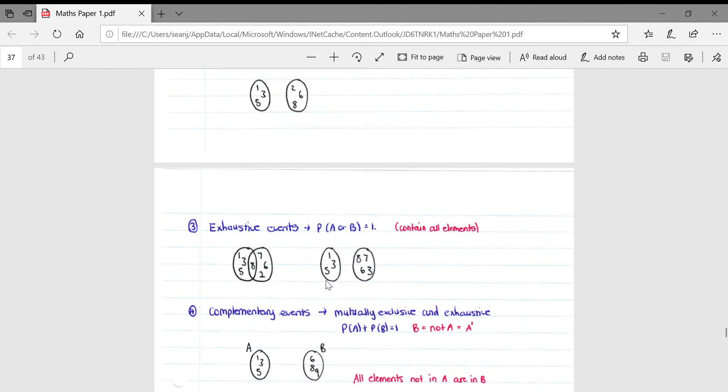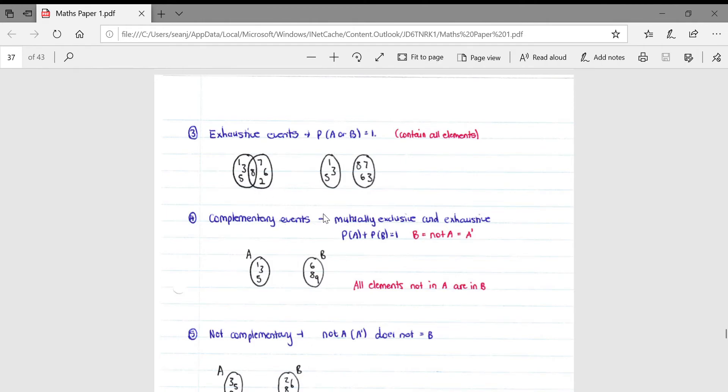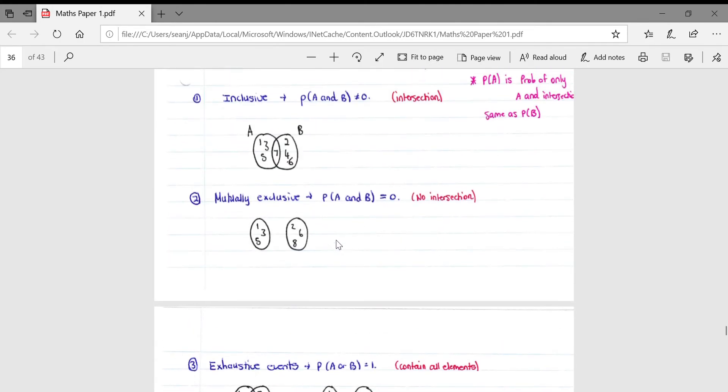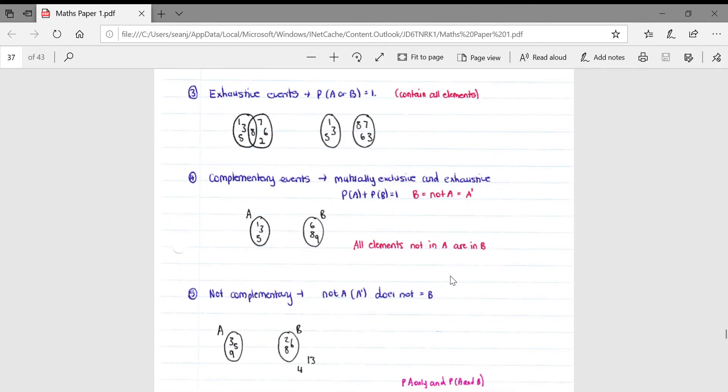Then complementary events: these are events that are mutually exclusive and exhaustive events. The probability of A plus the probability of B is always equal to one. So basically if we analyze this first part, mutually exclusive, this just means that there's no intersection as shown here. Exhaustive, this just means in simple English that there's no numbers or probability on the outside of your Venn diagram.